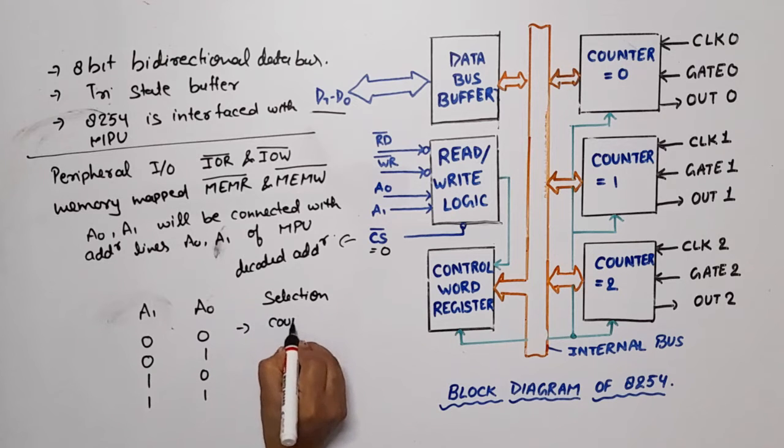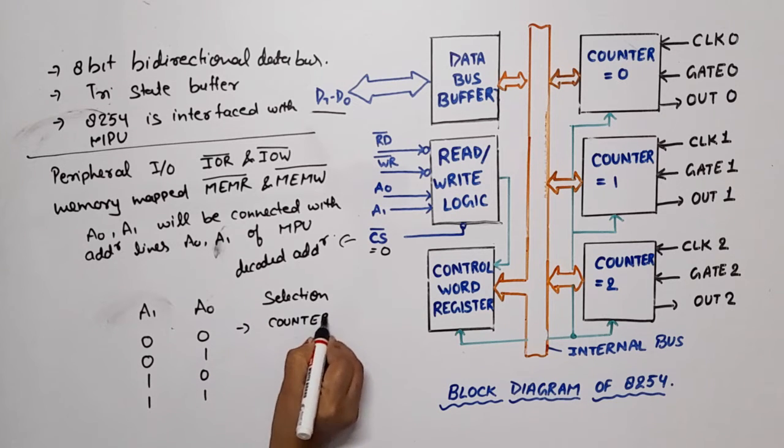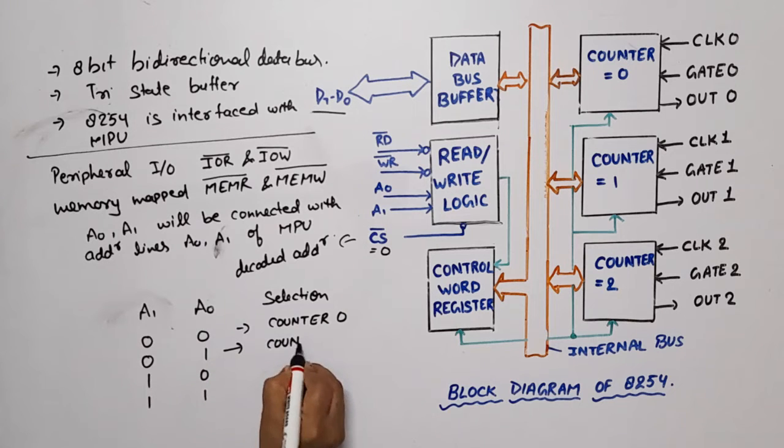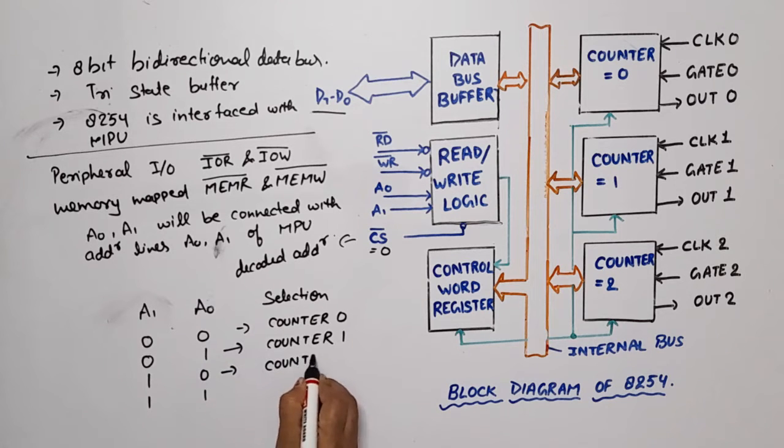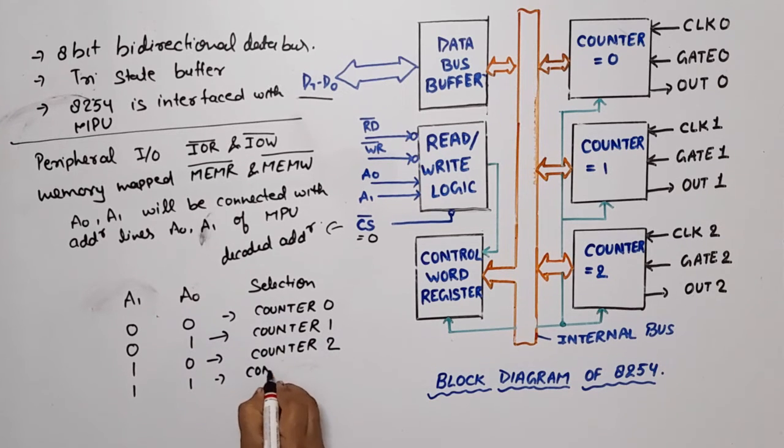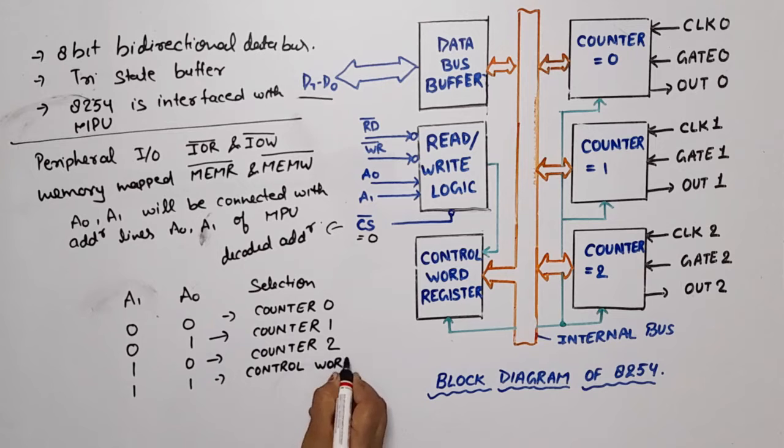If 00, in that case counter 0 will be selected. 01 counter 1 will be selected. For 10 counter 2 will be selected. For 11 control word register will be selected.